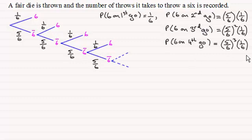So, you might have been able to start to see a pattern growing in this. What I want to look at now is, in general, let's say, what's the probability of getting a six on the rth go? Okay, the rth go.